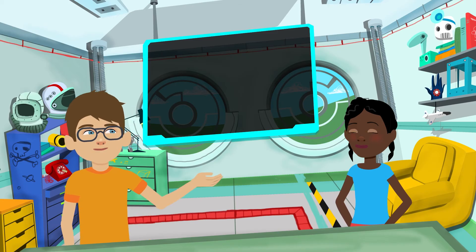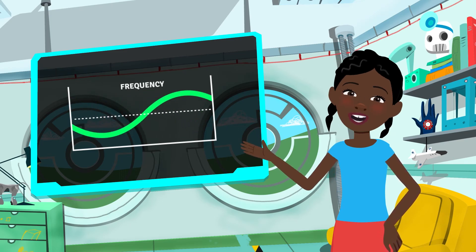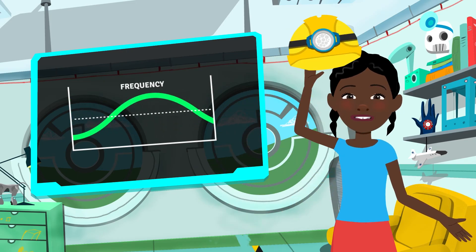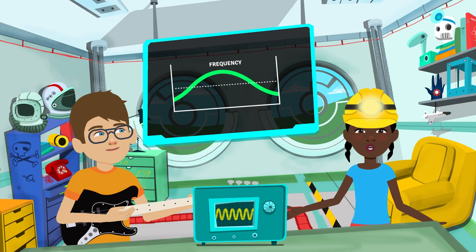Last one, frequency. The frequency is a number of waves passing a point for a measured period of time. Frequency depends on amplitude and wavelength.